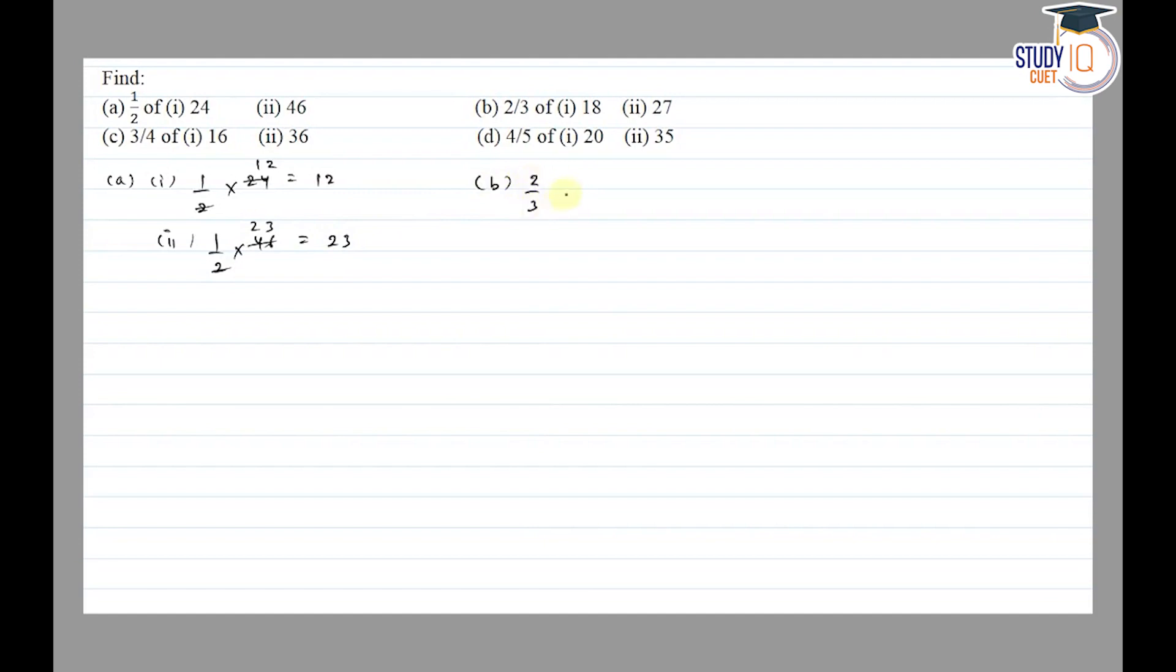2/3 of 18. We have 3 going into 18 six times, so 6 times 2 equals 12. Then second, 2/3 of 27. 3 goes into 27 nine times, so 9 times 2 equals 18. Then: